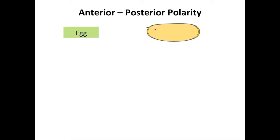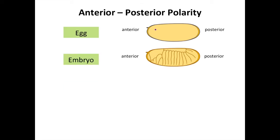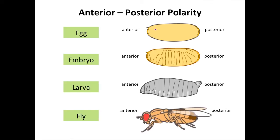The fruit fly egg has distinct polarity. Along the length of the egg, the anterior is at one end and the posterior at the other end. This polarity in the egg will give rise to polarity of the body plan in embryos, larvae, and eventually flies. This anterior to posterior polarity in Drosophila eggs depends on the anchoring of different RNA and protein molecules to each end of the egg, and it also depends on the regulation of translation.